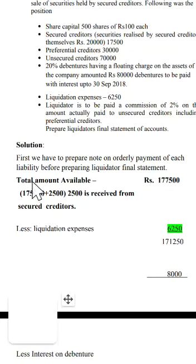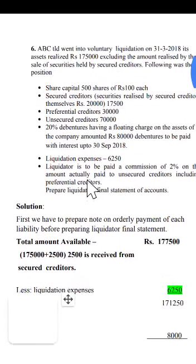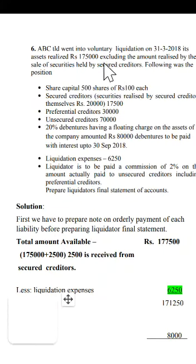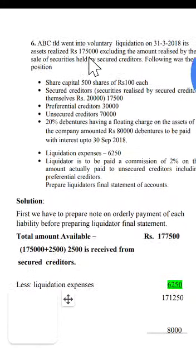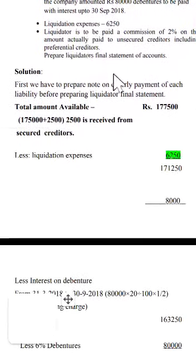If the liquidator is entitled to 2% commission on amount paid to unsecured creditors, we include preferential creditors since they are also unsecured creditors. But if the problem says excluding preferential creditors, then we consider only pure unsecured creditors. Now we prepare the liquidator's final statement. First, we find the total amount realized in the hands of the liquidator — the total amount available.